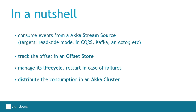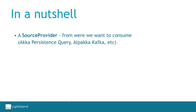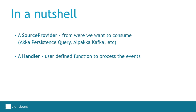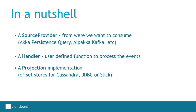To define a projection we need three components. First, the source provider — it defines the source of the stream. It can be an Akka Persistence journal, a Kafka topic, or any other source of events, as long as the events are associated with an offset. The events are delivered in an envelope containing the event payload and its offset. The handler is a user-defined function that processes the event — it is where you write your projection logic. Finally, you need to choose a projection implementation, which implies choosing the type of offset store and the supported delivery semantics.